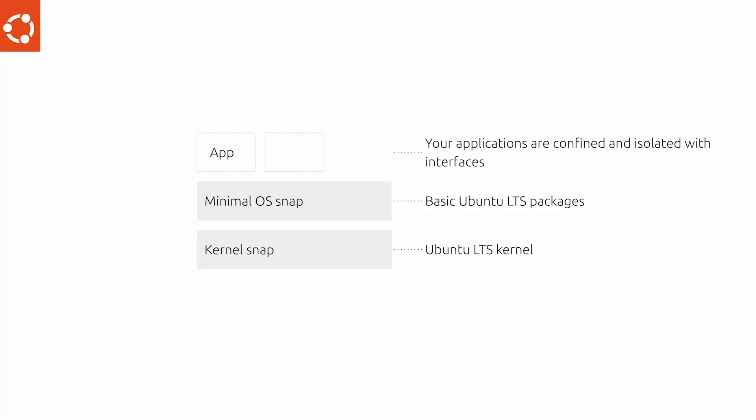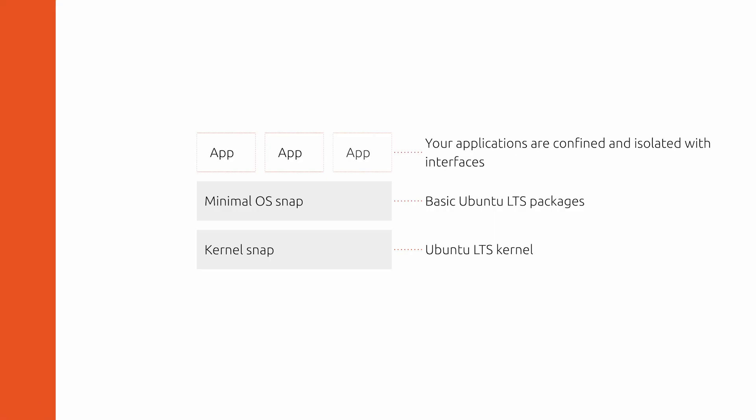And third, your applications sit on top. All elements in Ubuntu Core run isolated, confined with strict kernel-enforced rules using snaps. Therefore, there is a clean separation between all of these elements, maintaining the integrity of the operating system while allowing the applications to function normally in their sandbox.